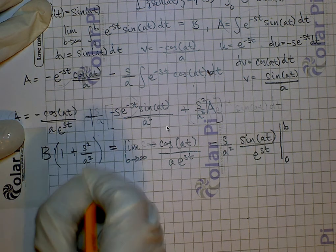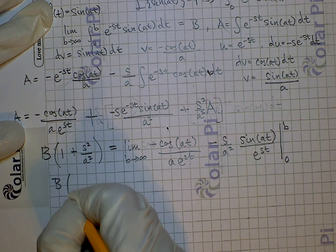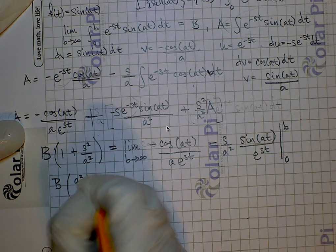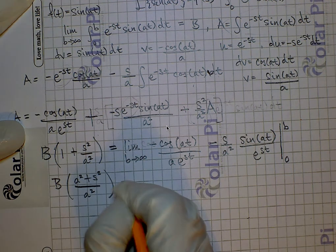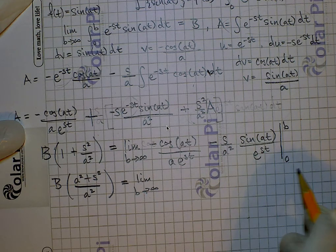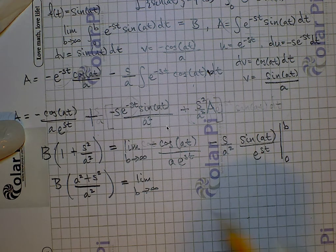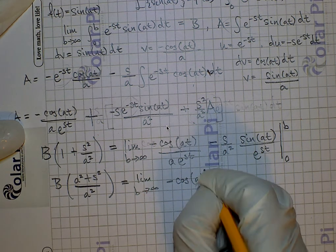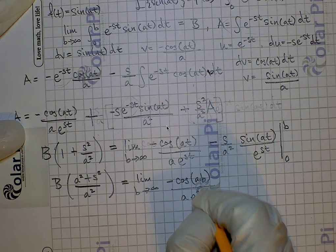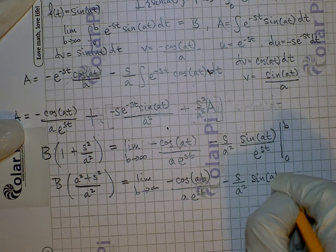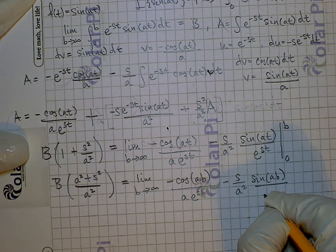Getting common denominators, capital B times the quantity a squared plus s squared over a squared equals the limit as b goes to infinity. Plugging in b gives minus cosine of ab divided by a times e to the sb, and then minus s over a squared times sine of ab over e to the sb.